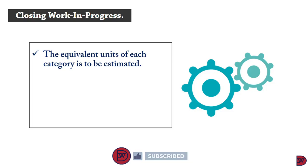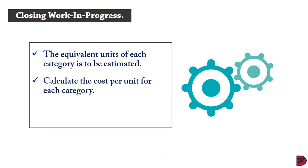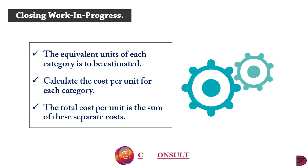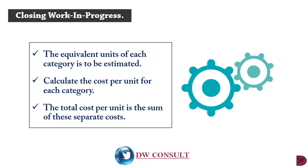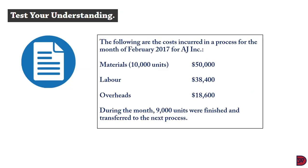With closing work in progress, the equivalent unit of each category — material, labor, and overhead — is to be estimated based on their level of completion. Then you calculate the cost per unit for each category. The total cost per unit is the sum of the individual costs calculated in the step above.